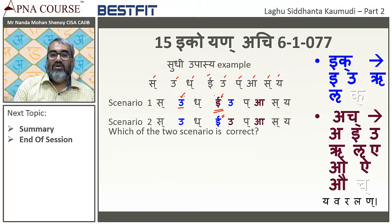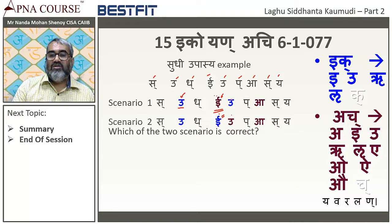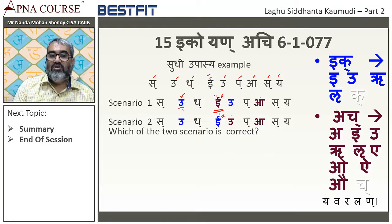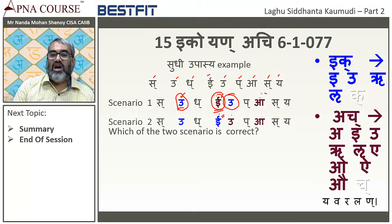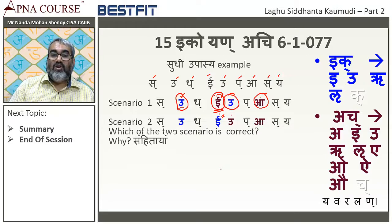So the correct applicable scenario is: Ik (E) immediately followed by Ach (A) — that is where the rule applies. Now the question is: does the change happen to Ik or to Ach? The Sutra says Yan when Ach follows — but there is confusion about which letter changes.